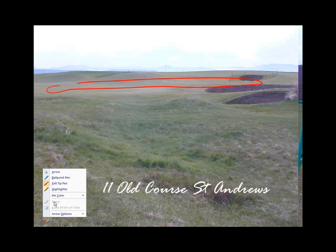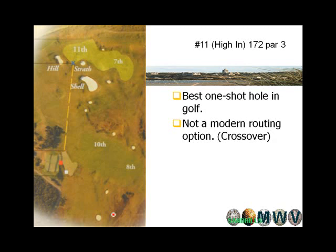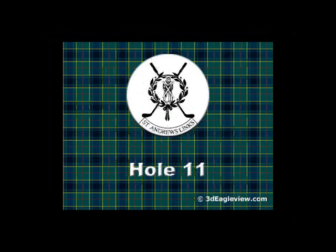The 11th hole shares a green with the 7th hole. It's about a mashie — like a 5-iron shot. If you want to hit a little bouncer up here, from anywhere in this area you can putt and have a pretty good chance of making 3. But anywhere above the hole and you're dead — it's a very difficult 3. Many people who write about golf course architecture have said this is the best one-shot hole in golf. It's not a modern routing because of the crossover, but it is a magnificent hole.